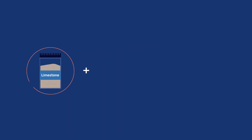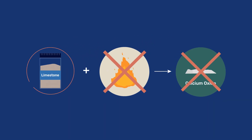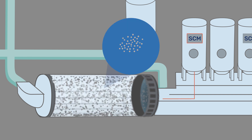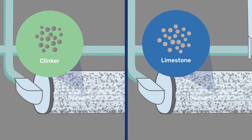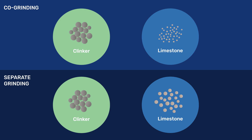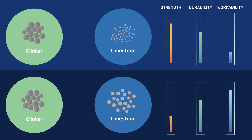When used as an SCM, limestone is not calcined and therefore does not emit CO2 as in clinker production. As an SCM, limestone is added at the grinding stage or ground separately and intermixed after grinding. We must be concerned about how this affects the respective particle size distribution of cement and limestone, and thereby properties such as strength, durability, and workability.